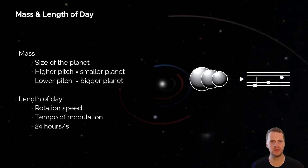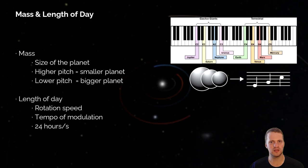The sonification of mass is conveyed through the pitch of the fundamental sound of the planet, such that a bigger planet has a lower pitch and a smaller planet has a higher pitch. The planets were placed in a three octave range, where the outer planets are placed in the lowest octave because of their larger size, and the inner planets are placed in the higher octave considering their smaller size.